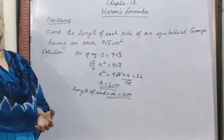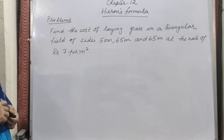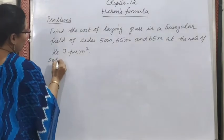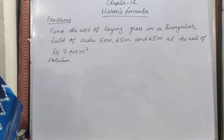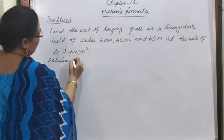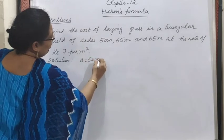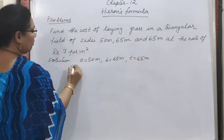Next problem: find the cost of laying grass in a triangular field of sides 50 m, 65 m, and 65 m at the rate of ₹7 per meter square. All three sides of the triangular field are given, so we use Heron's formula. We write: a = 50 m, b = 65 m, c = 65 m. Now we calculate the semi-perimeter s.